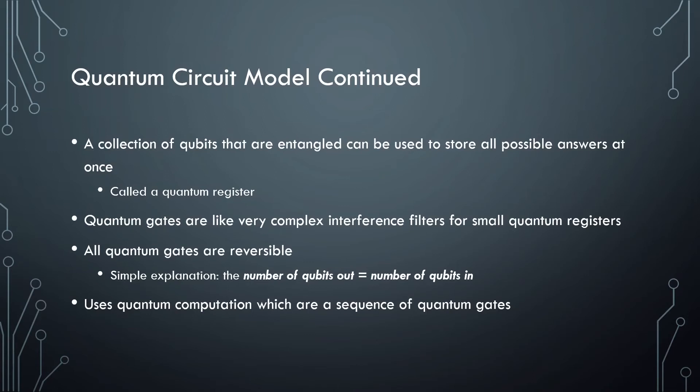For a small illustration, where two binary bits can be the binary number 0 to 3, a two-bit quantum register holds 0 to 3 at once. Using an interference filter on the quantum register and then collapsing it can produce the desired result or answer.